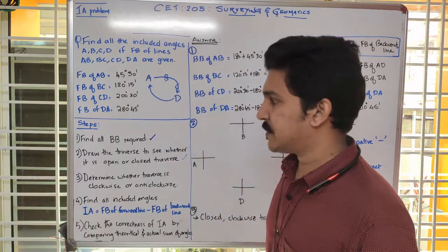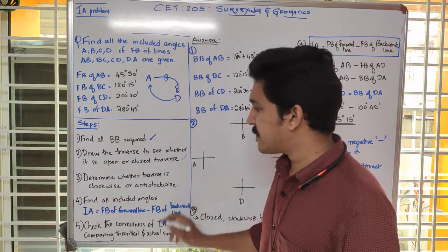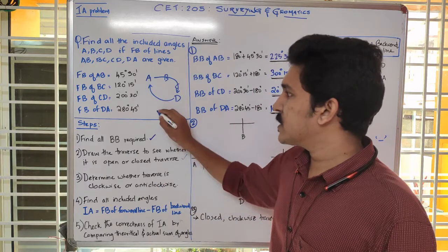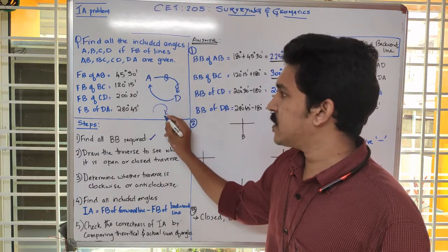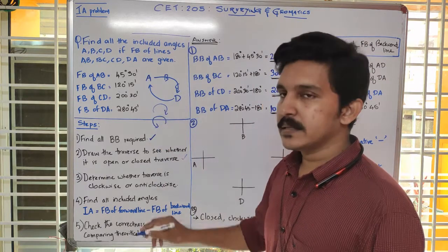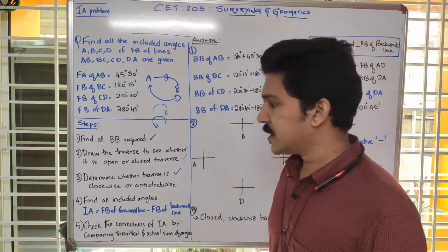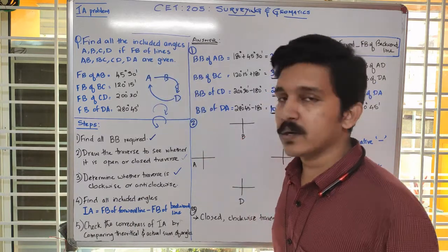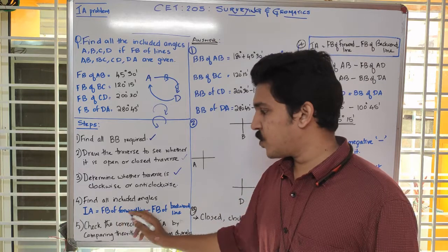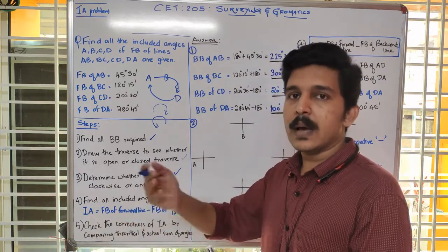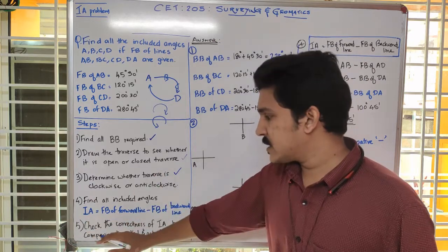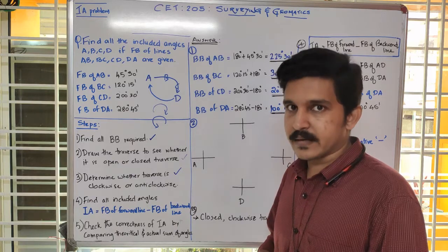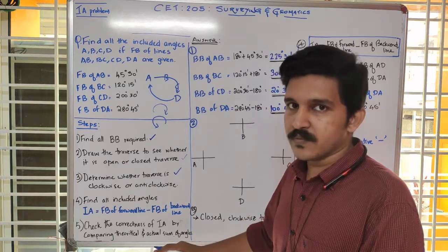An open traverse is open at one end, while a closed traverse completes back at the first point. The third step is to determine whether the traverse is a clockwise or anticlockwise traverse — whether it goes A, B, C, D clockwise or in the opposite order. This is very important. The next step is to find the included angle using the equation: included angle equals fore bearing of the forward line minus fore bearing of the backward line.